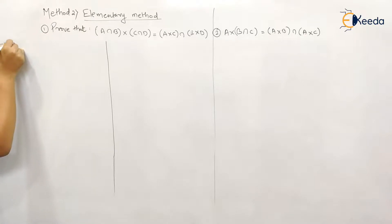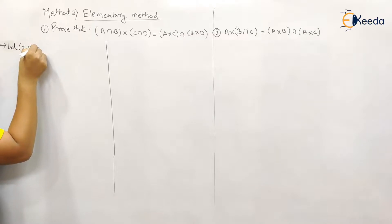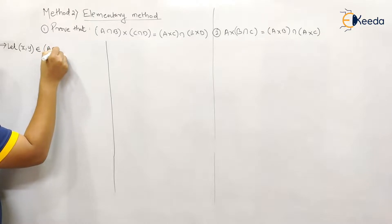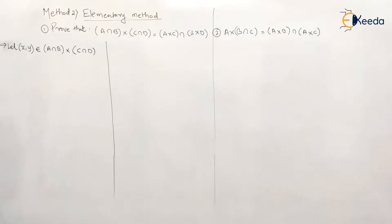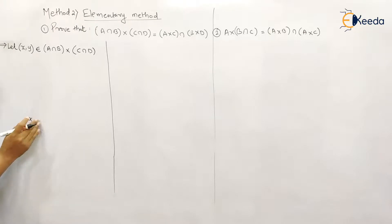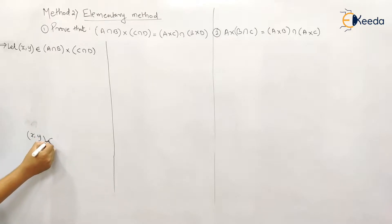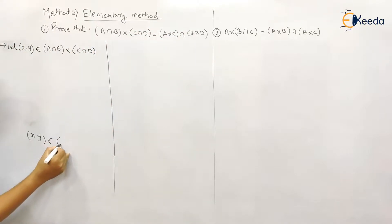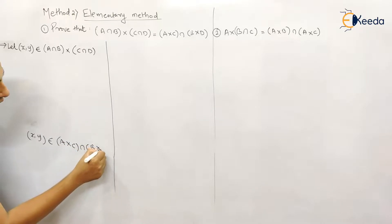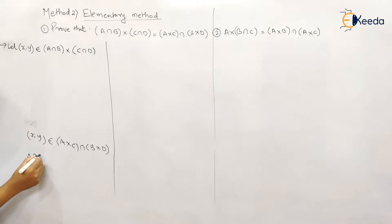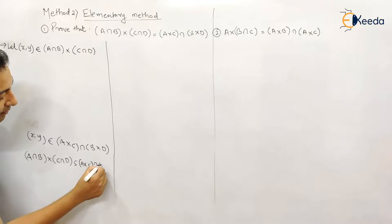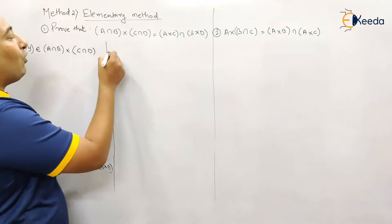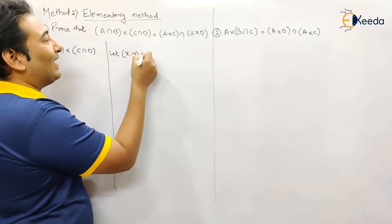In the elementary method, we're going to assume the elements. Let us assume x comma y belongs to LHS. The procedure is very interesting and simple — if you understand one problem you can manage all the problems. We assume x comma y belongs to LHS and will prove that after solving a few steps, x comma y belongs to RHS. This means LHS is a subset of RHS, because an element belonging to LHS also belongs to RHS.